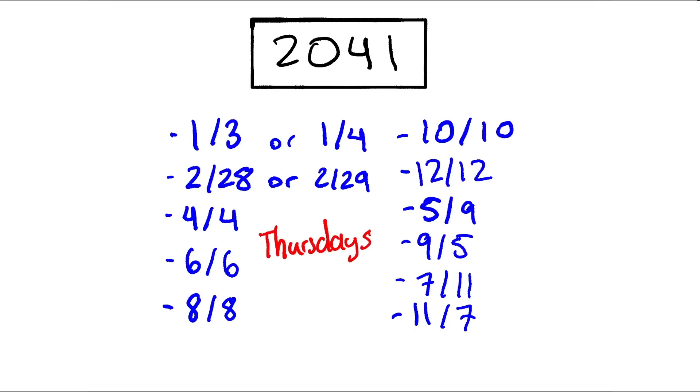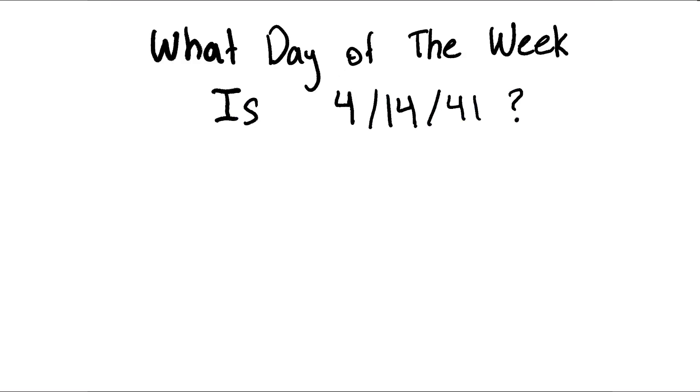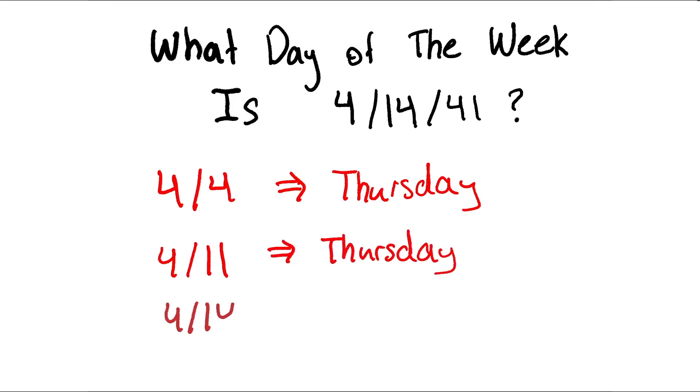So then if someone asks us a date about 2041, we're able to quickly figure out what day of the week it is by finding one of these doomsdays that are close to the date, and just adding a few numbers to get the specified date. So for example, what day of the week is 4/14/41? Well, the quick thing to do now is we know 4/4 is a Thursday, and following the week pattern, that would make 4/11 also a Thursday. So then finally, 4/14 is 3 days past a Thursday, which is a Sunday. That's our final answer.